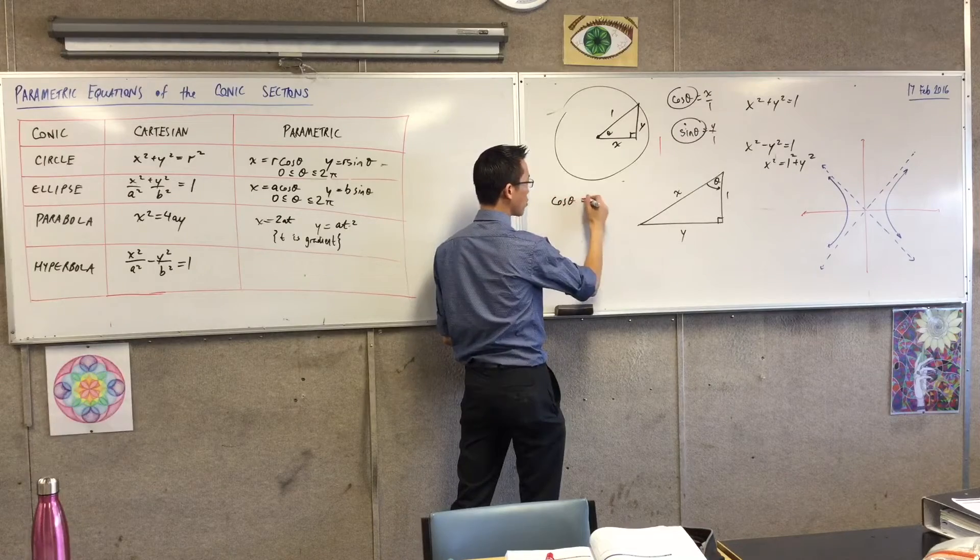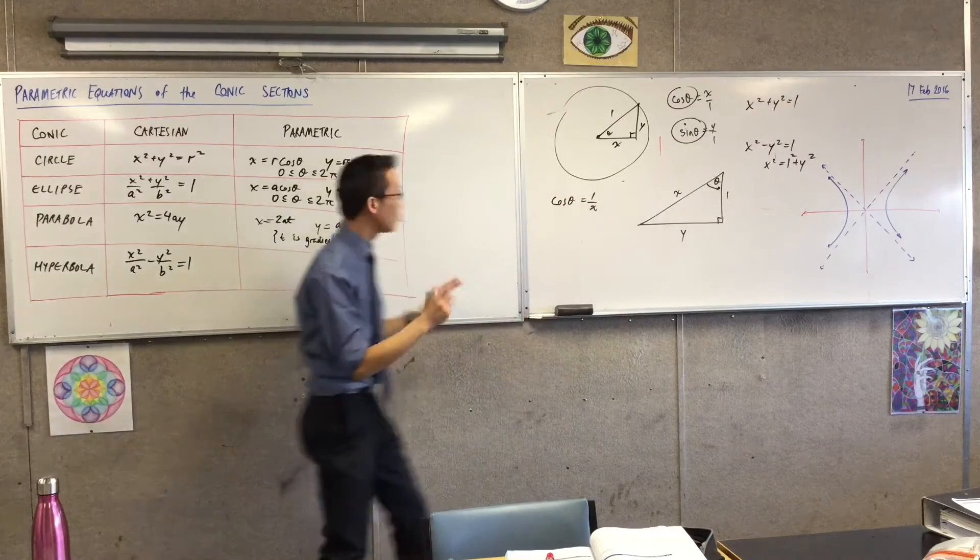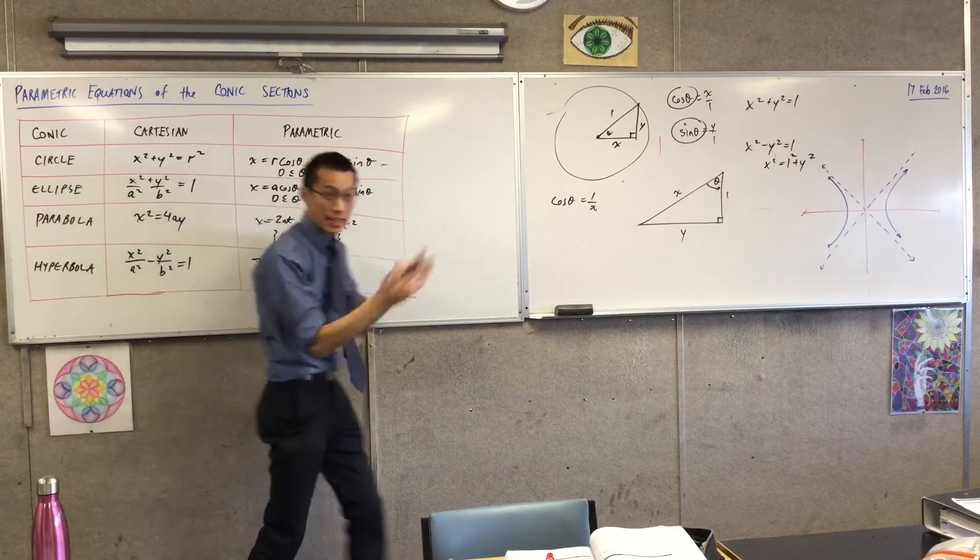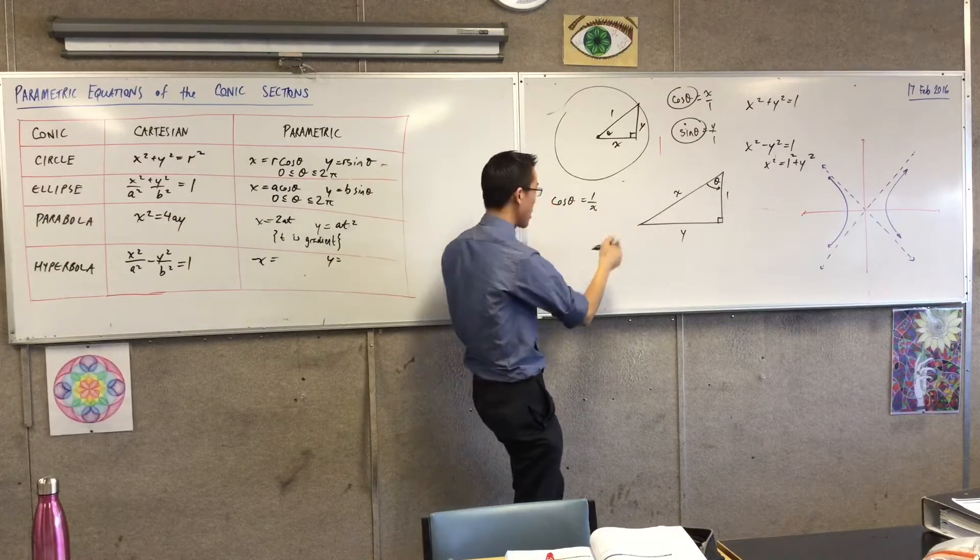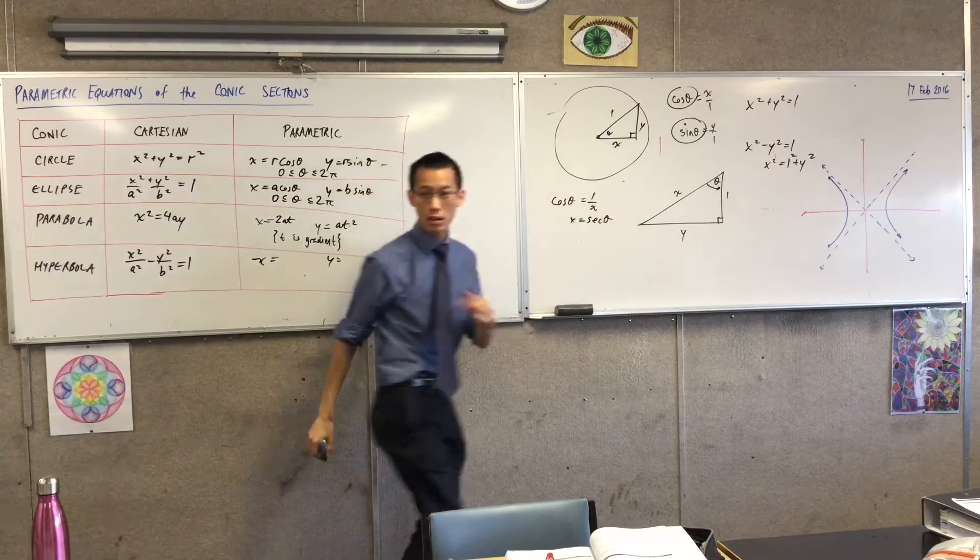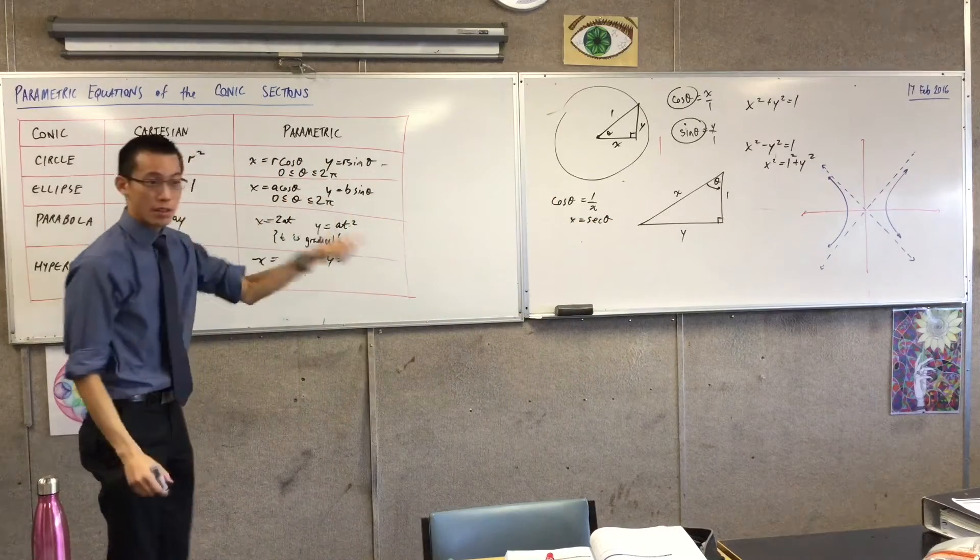So I can say cos theta equals 1 on x, but I'm trying to head towards parametric equations. I'm trying to head to x and y equals. So I need to take reciprocals here. Do you see that? So really I would say x equals sec theta. Agree? So that's good.